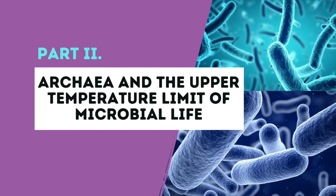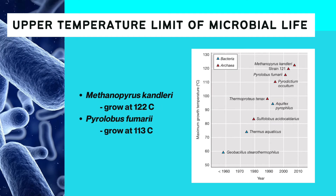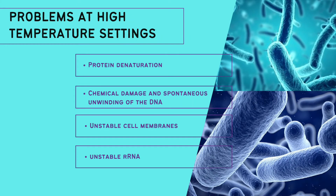Archaeans are known for pushing the upper temperature limit possible for life to exist. Currently, Methanopyrus kandleri holds the record for growing at 122 degrees Celsius. Its optimum temperature is higher than that of the former record holder, Pyrolobus fumarii, which grows at 113 degrees Celsius. Problems faced by microbes in high temperatures include protein denaturation, chemical damage and spontaneous unwinding of DNA, unstable cell membranes, and unstable ribosomal RNA.